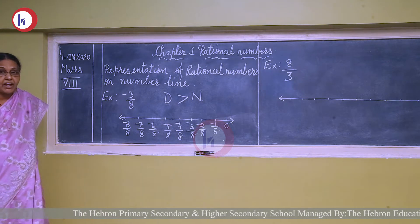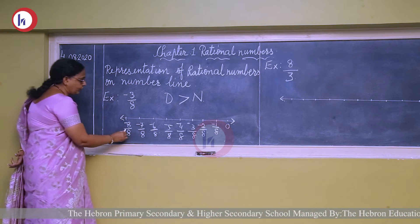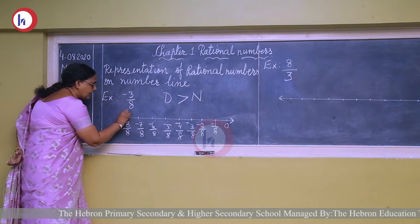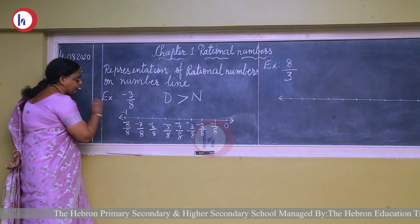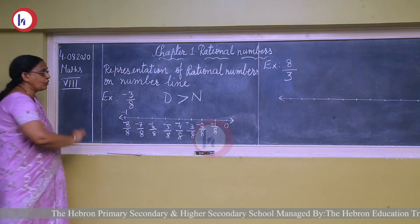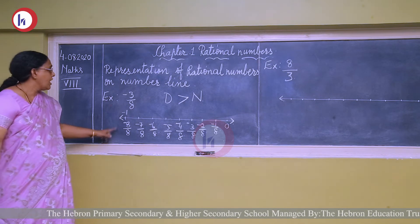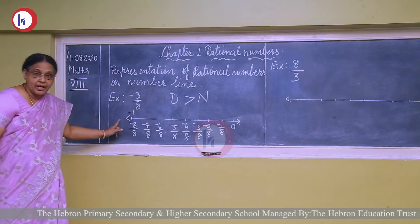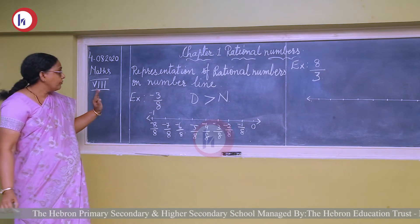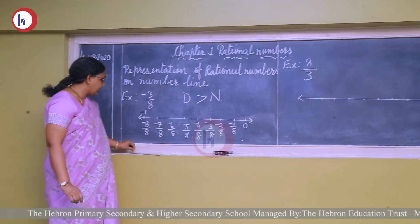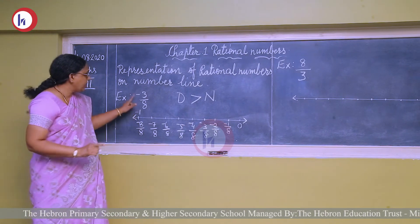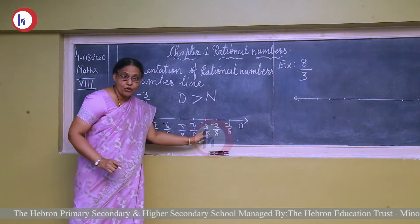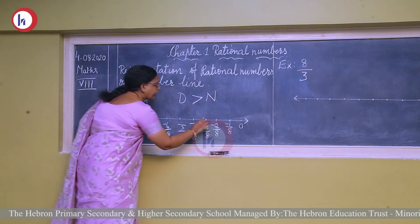Then minus 6 upon 8, minus 7 upon 8, and here it will come minus 8 upon 8. This minus 8 upon 8 can be cancelled and you get minus 1. From this we can know that our number is coming between 0 and minus 1. So we can plot minus 3 upon 8 at the third division from zero on the left side.